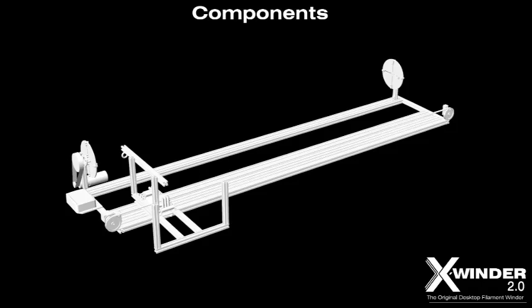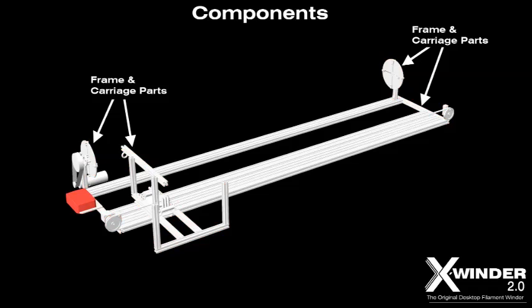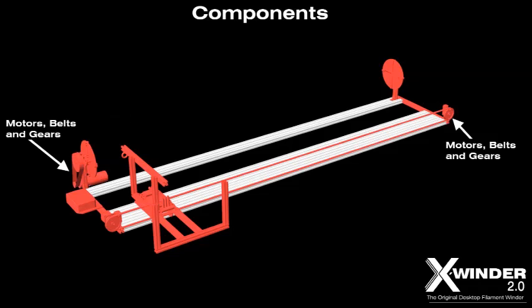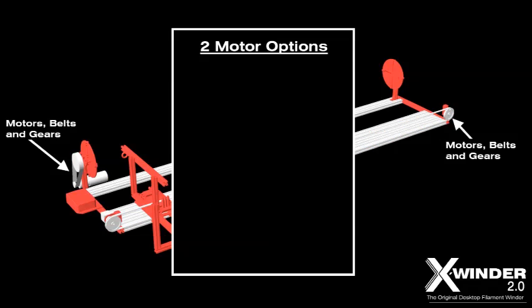The X-Winder 2 can be purchased in whole or in parts. You can buy the control box with electronics and software as a standalone product. The frame and carriage parts can be added as a second standalone product, or you can buy the X-Winder 2 with the required stepper motors, belts, and gears included. Since larger mandrels require more motor torque, there are two motor size options available.